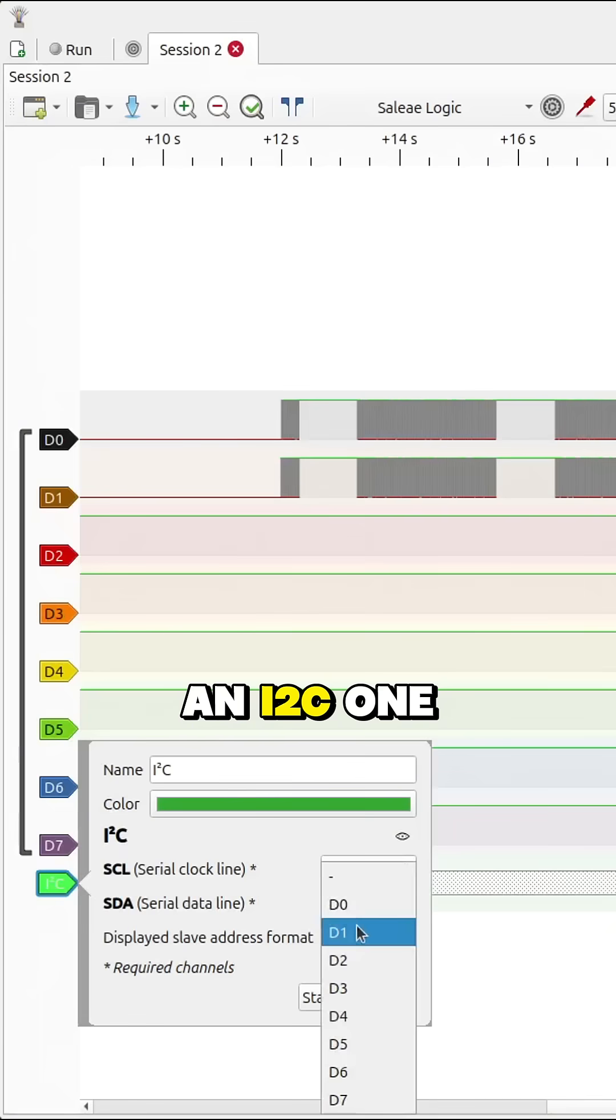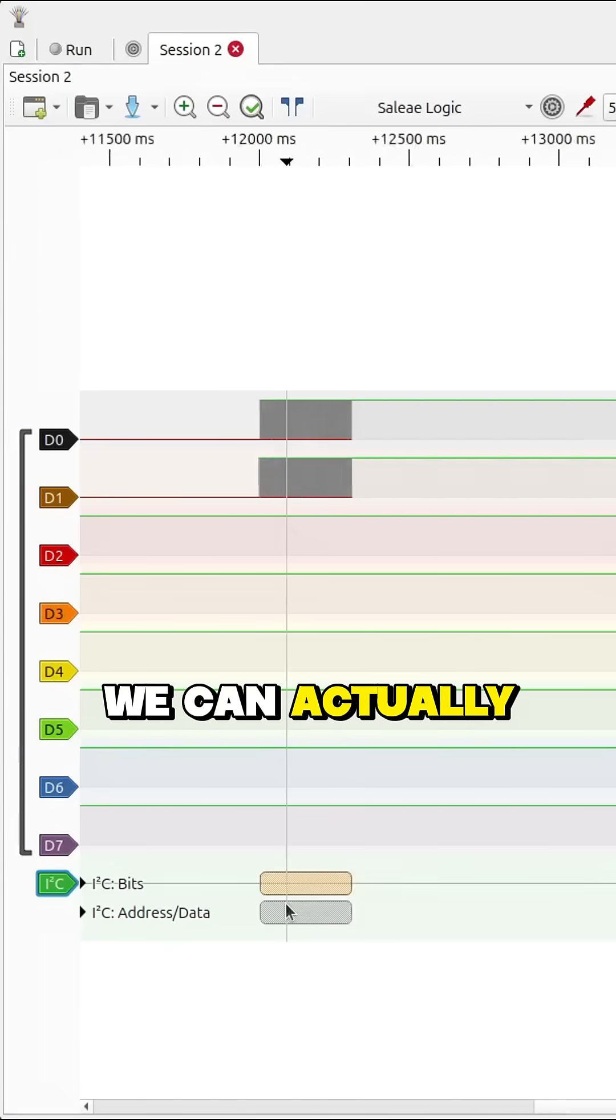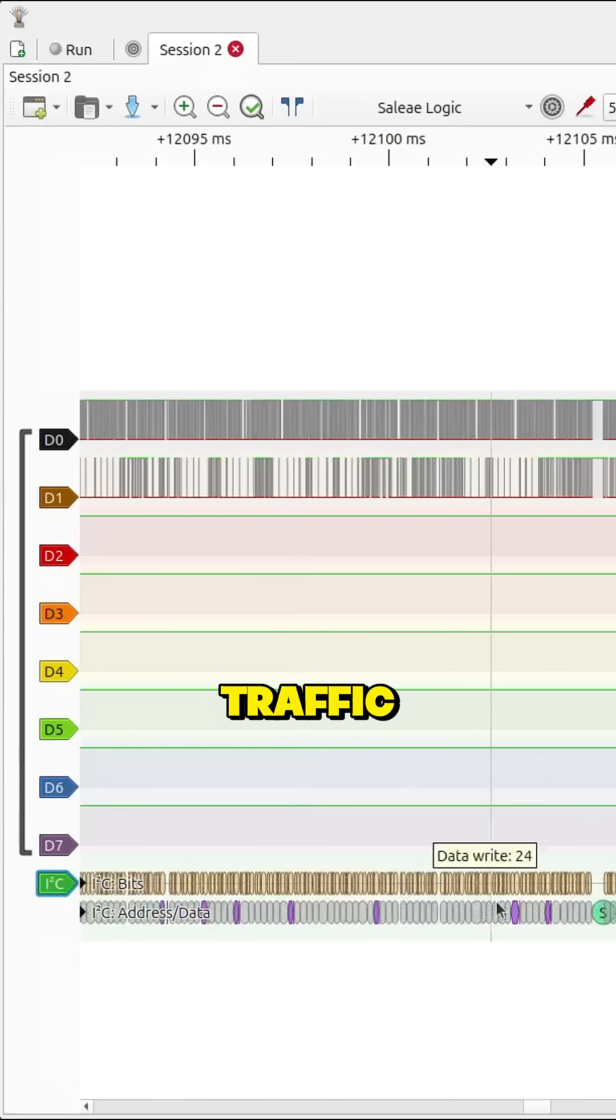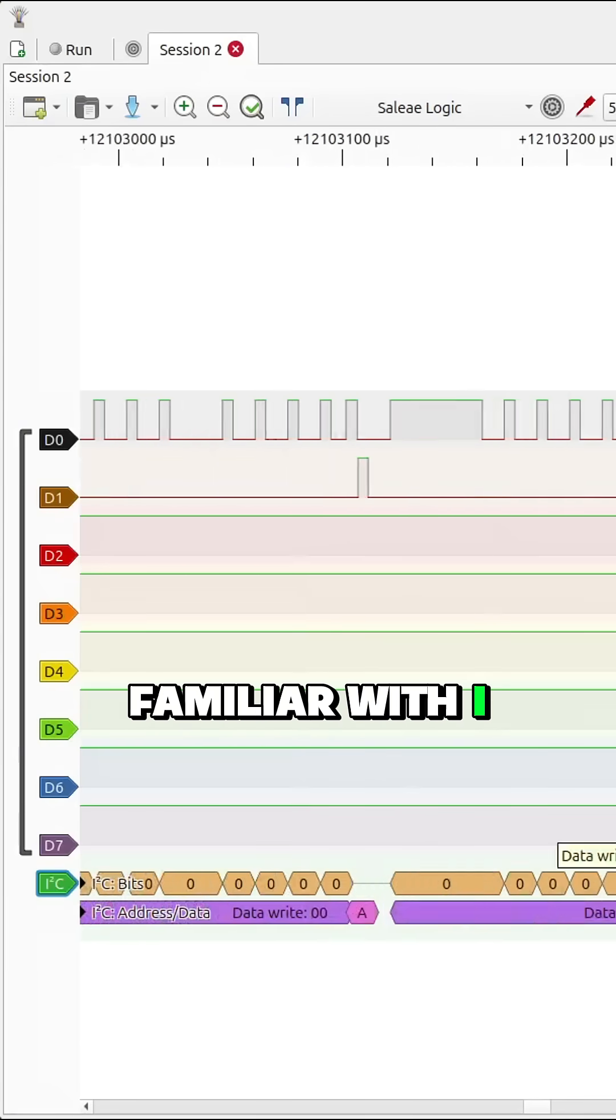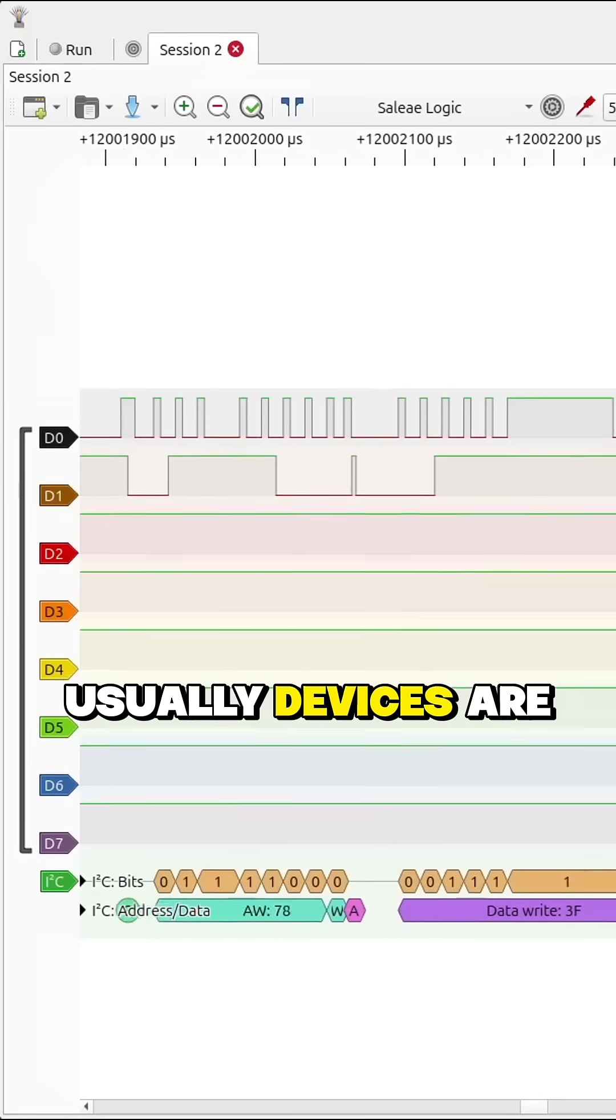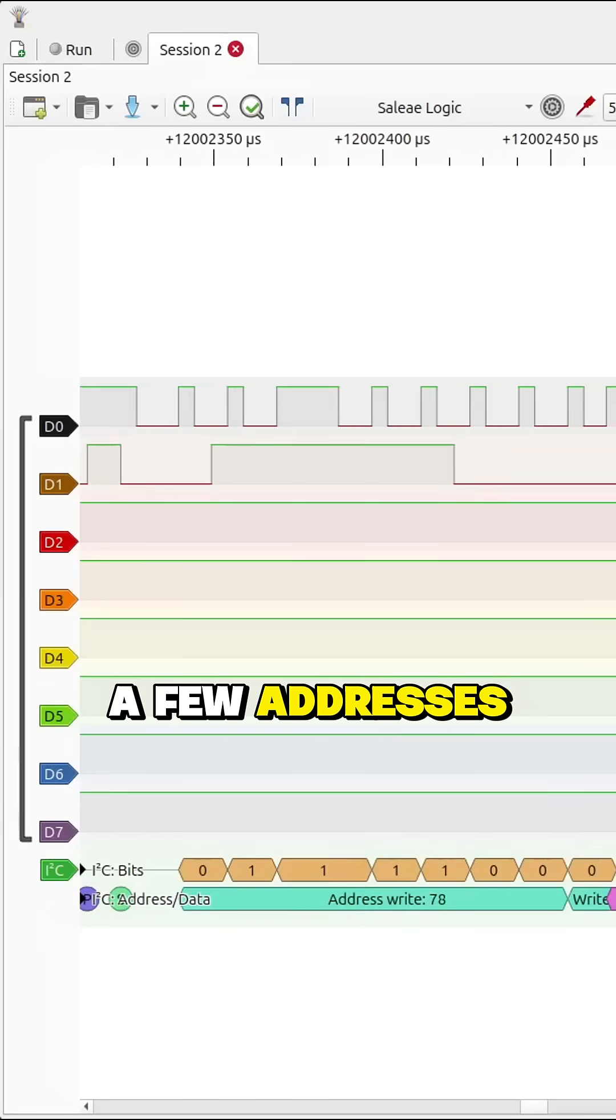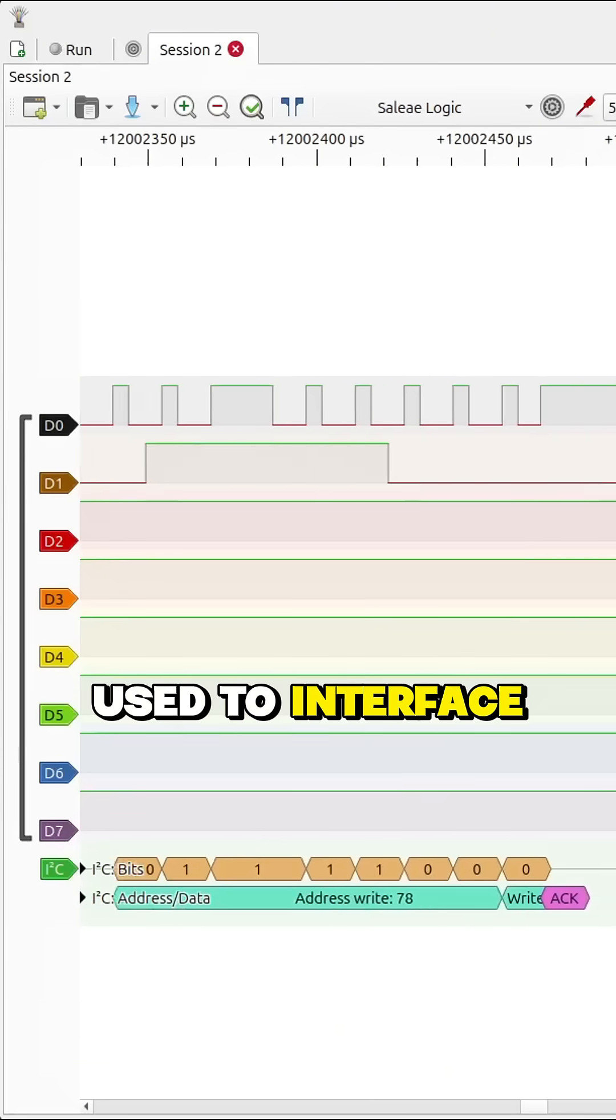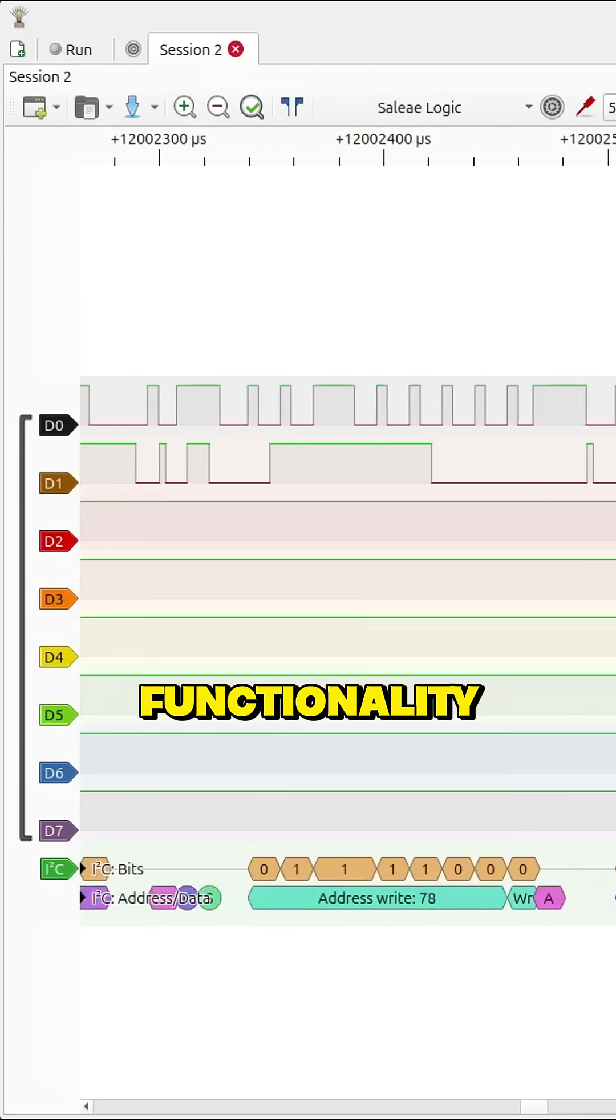Let's add in an I2C decoder and now we can actually see what's going on with the I2C traffic. If you're not familiar with I2C, usually devices are given one or a few addresses that can be used to interface with that device and its different functionality.